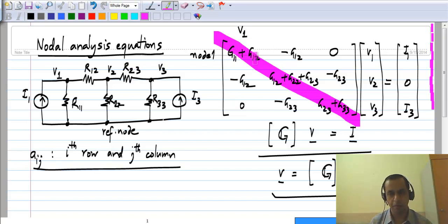We have G11 plus G12. Similarly, if you look at A22, that is second row and second column, we have G12 plus G23. And finally, A33 is G23 plus G33. You will easily notice that the diagonal elements are basically sum of conductances connected to particular nodes.